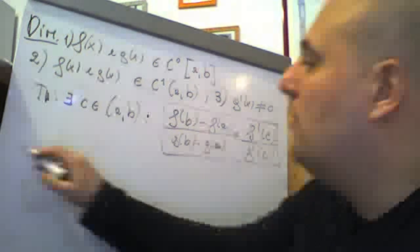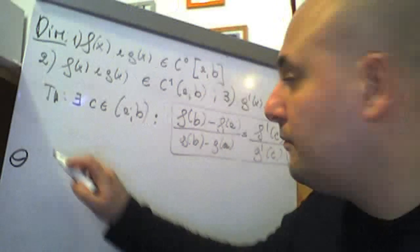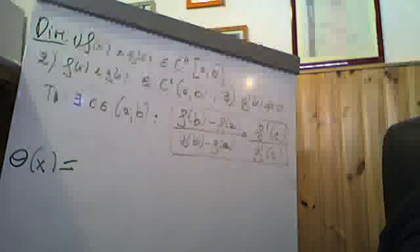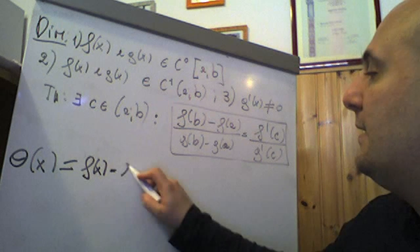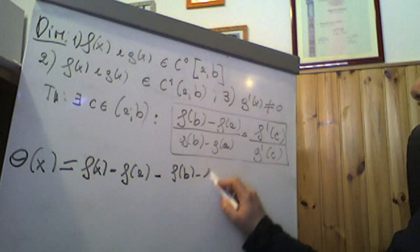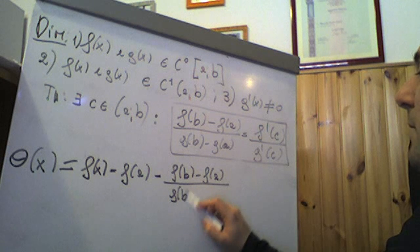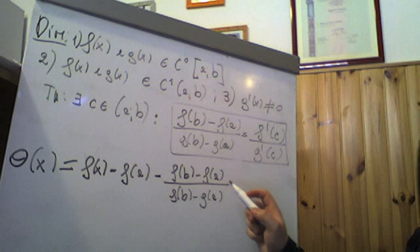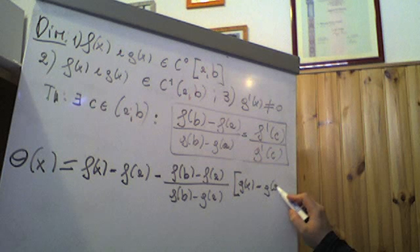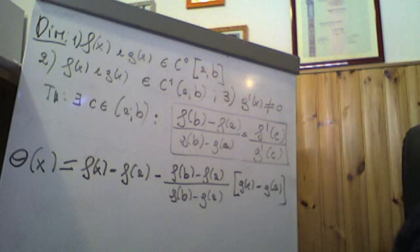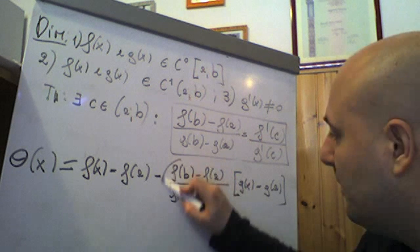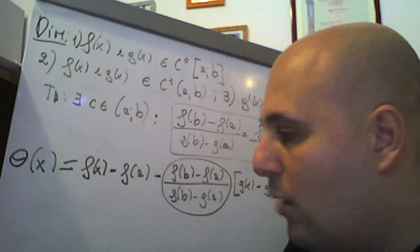A questo punto andiamo a introdurre una funzione ausiliaria, che indichiamo con θ(x). Questa funzione ci serve per dimostrare il teorema. θ(x) è pari a f(x) − f(a) meno il rapporto [f(b)−f(a)] / [g(b)−g(a)], moltiplicato per [g(x) − g(a)]. Notiamo che f(b)−f(a) / g(b)−g(a) è certamente una quantità costante, dato dal rapporto tra due numeri.